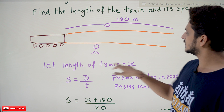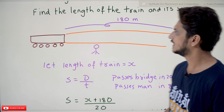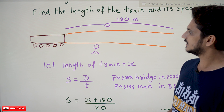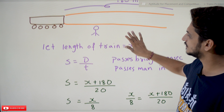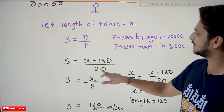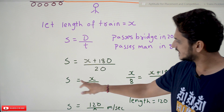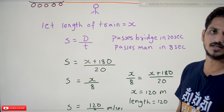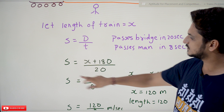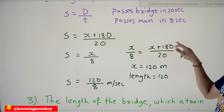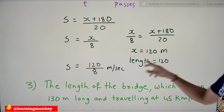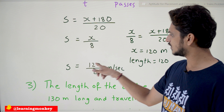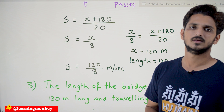Let the length of the train equal x. To pass the bridge: speed = (x + 180) / 20. To pass the man: speed = x / 8. Since speed is the same, equate them: x/8 = (x + 180)/20. Solving this, x equals 120 meters — the length of the train is 120 meters. Once we have the length, speed equals distance by time, which is 120/8 meters per second.